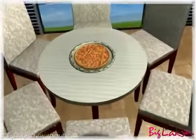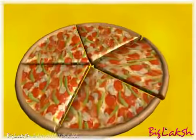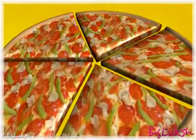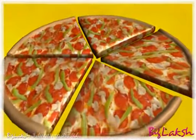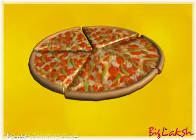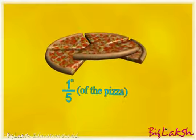Now you can see a delicious pizza. Let us divide this pizza into five equal parts and see how we can represent this on a number line. As you can see, one piece of the pizza represents one-fifth of the entire pizza.